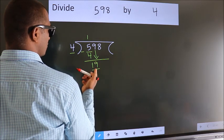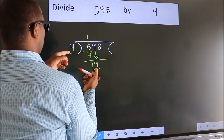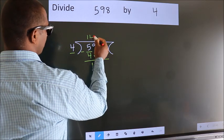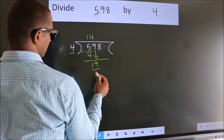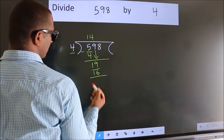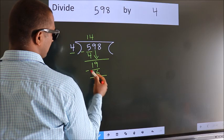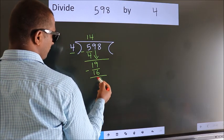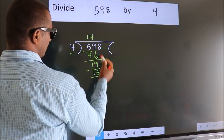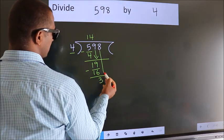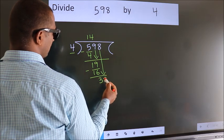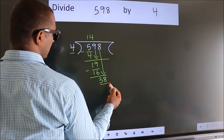A number close to 19 in the 4 table is 4 4s 16. Now we subtract. We get 3. After this, bring down the beside number. So 8 down. So 38.